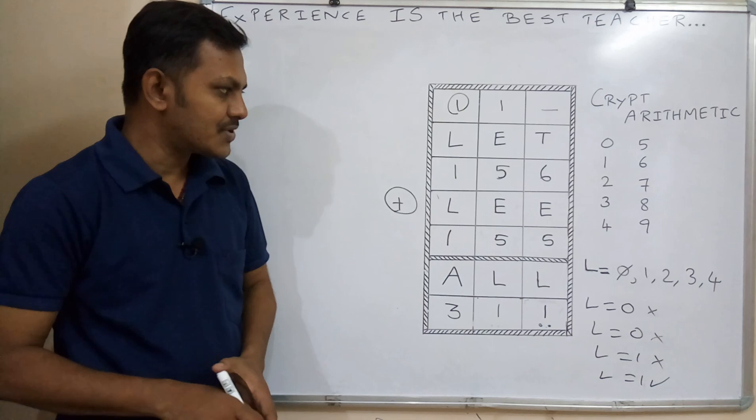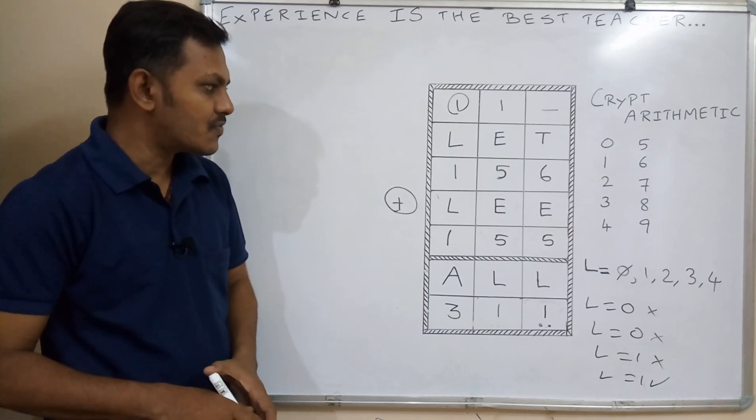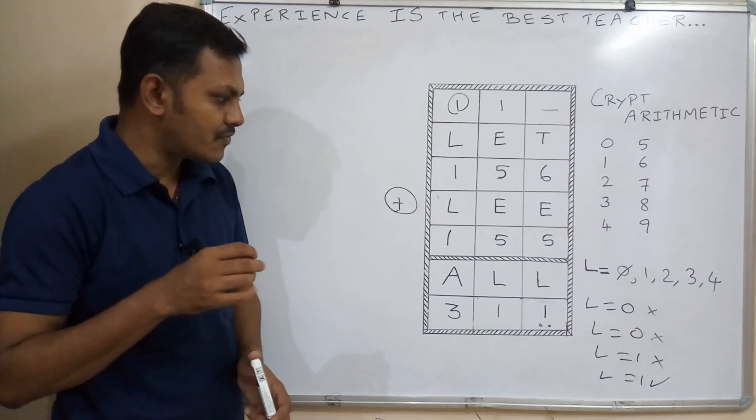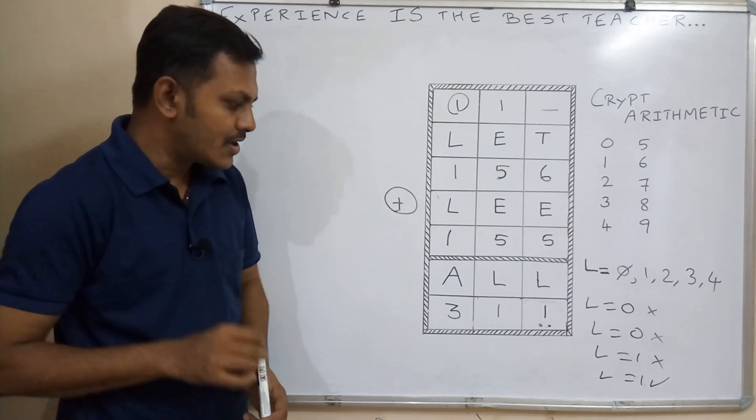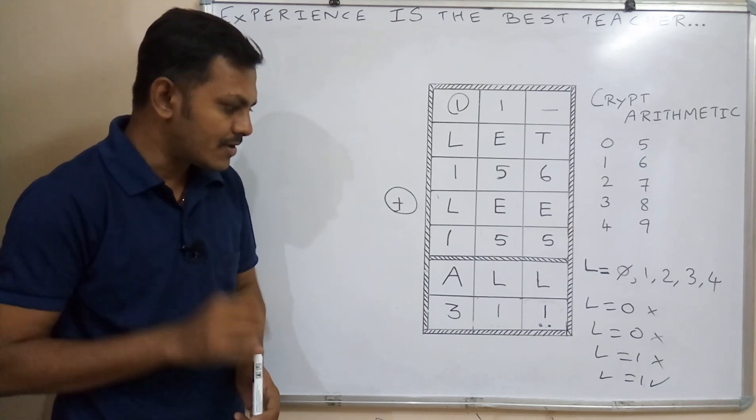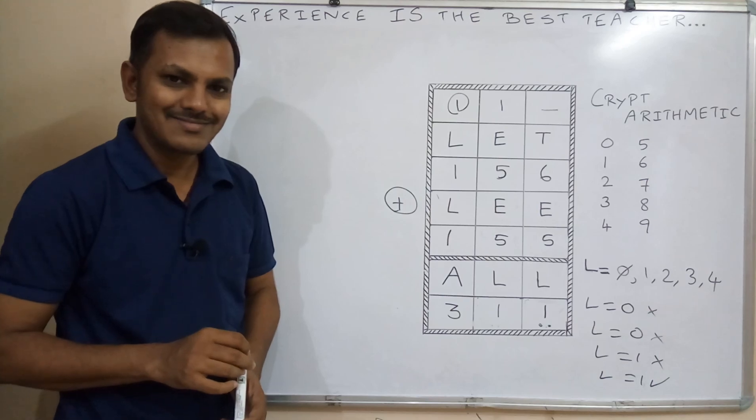So the answer for this question is 156 added to 155 equals 311. Thank you for watching.